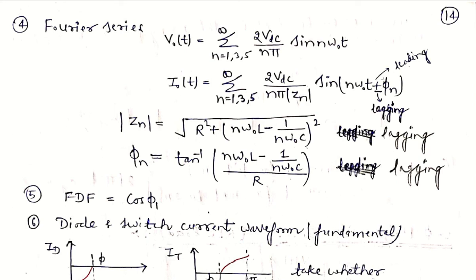The impedance for the lagging load case is: Zn = √(R² + (XL − Xc)²), where XL = nω₀L. The harmonic number is n, and the power factor angle is: φn = tan⁻¹((nω₀L − 1/(nω₀C)) / R), which is XL minus Xc divided by R for the lagging case. For the leading load case, simply substitute Xc greater than XL in these expressions.